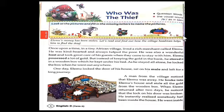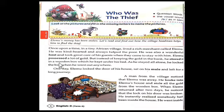Now let me read the lesson and explain it. Once upon a time, in a tiny African village, lived a rich merchant called Elimu. He was kind-hearted and always helped the poor. He was also a wonderful host and took great care of his guests when they came to stay with him. Elimu possessed a lot of gold. But instead of keeping the gold in the bank, he stored it in a wooden box which he kept under his bed. As he stayed all alone, he locked the box when he went out anywhere.